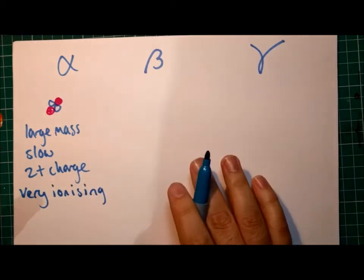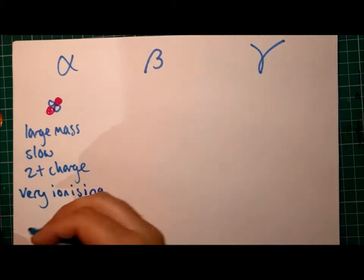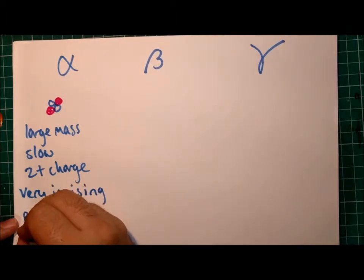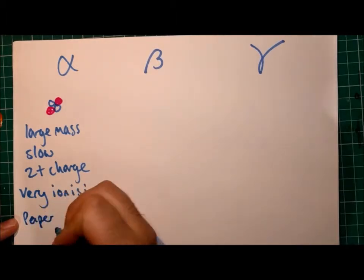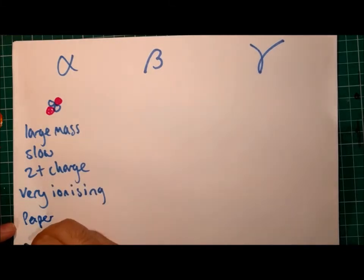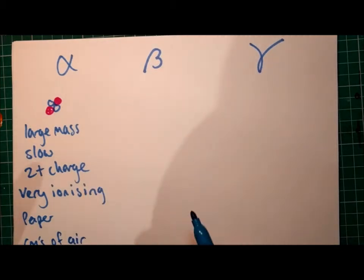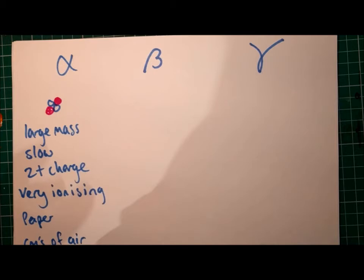So generally, alpha radiation can be stopped by either a sheet of paper, like the one I'm writing on right now, or a few centimeters of air. And that's related to the fact that it's so ionizing. It will ionize almost anything it comes into contact with, and once it's ionized that material, it won't travel any further.